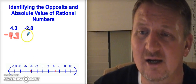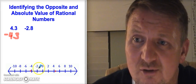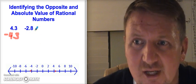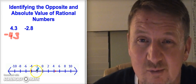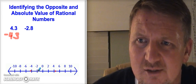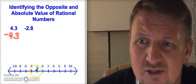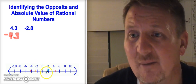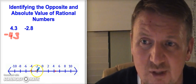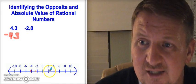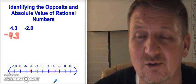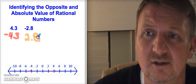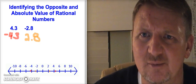Now for negative 2.8 — we graph it by starting at zero and counting left. Negative 2 is our whole number, but 0.8 makes it a little bit past negative 2 toward negative 3, so it's just a little shy of halfway between negative 2 and negative 3. To find the opposite, we go the same number of places in the opposite direction — two places and a little bit more to the right. The opposite of negative 2.8 is 2.8.